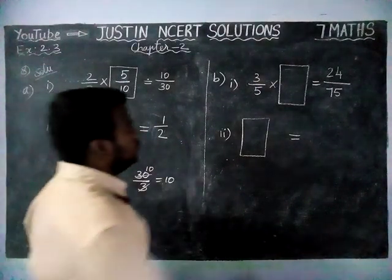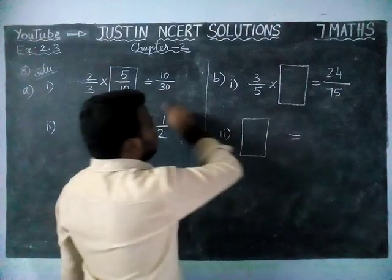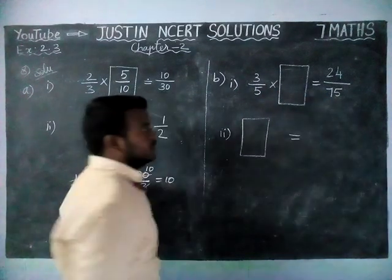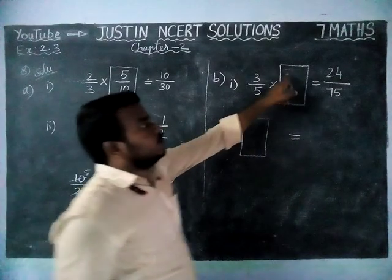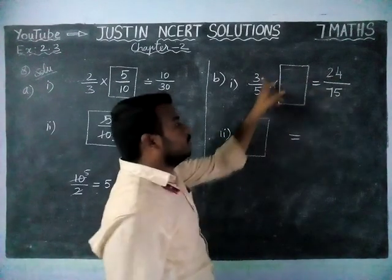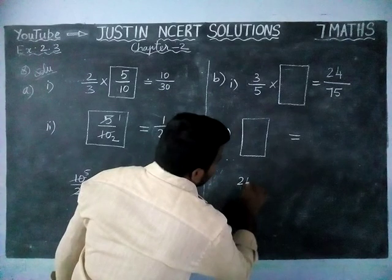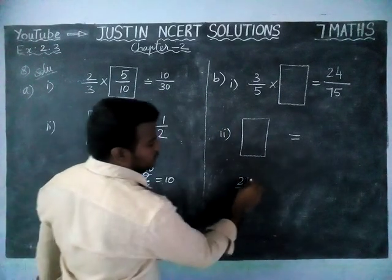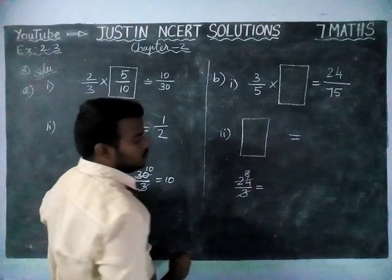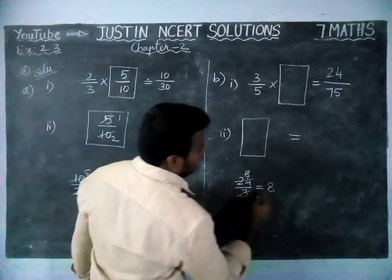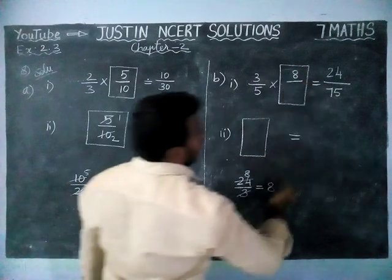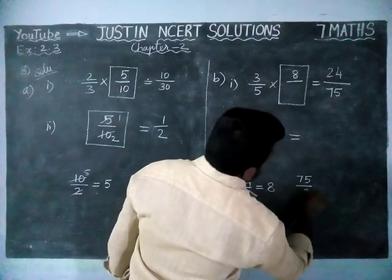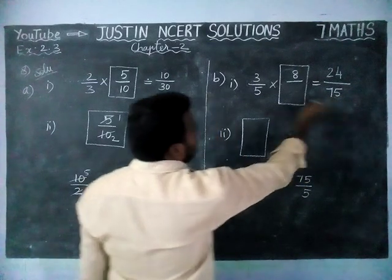Next, we are going to find for option B — same model. So, 3 by 5 into box is equal to 24 divided by 75. To find the numerator, we have to divide 24 by the numerator number 3. 24 divided by 3 is equal to 8. So, numerator value is equal to 8.